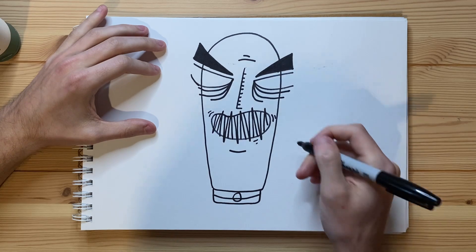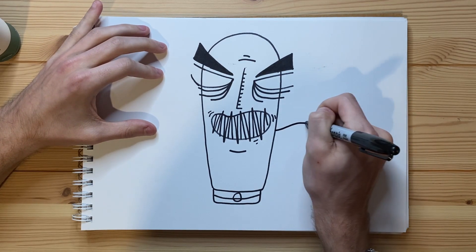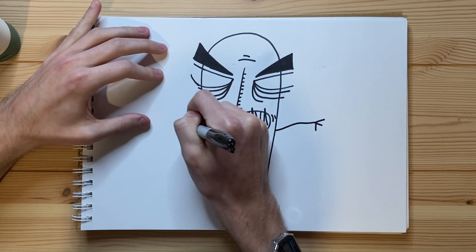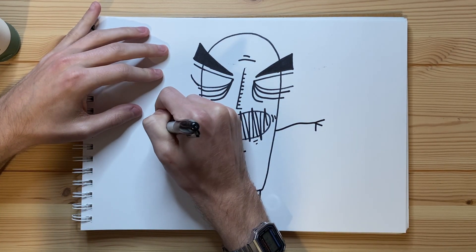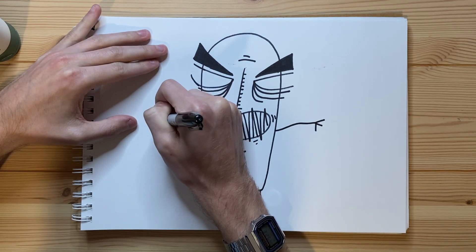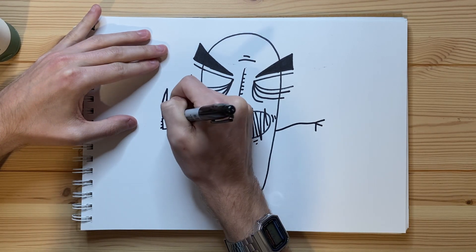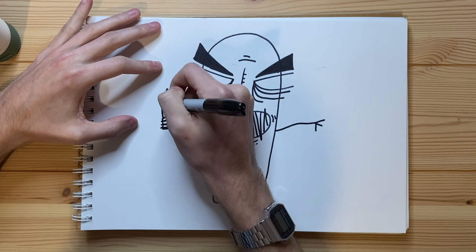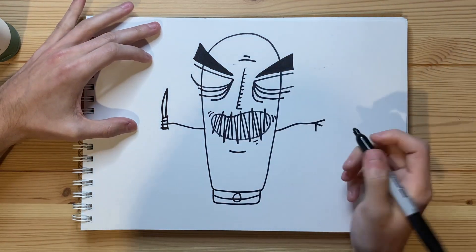Let's go ahead and give this bottle some arms as well. And then this arm as well. And I'm thinking I want it holding a knife in this arm. There we go. Let's just go ahead and add some extra details to that knife.